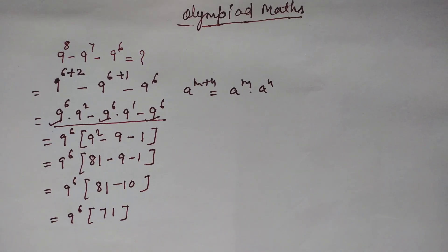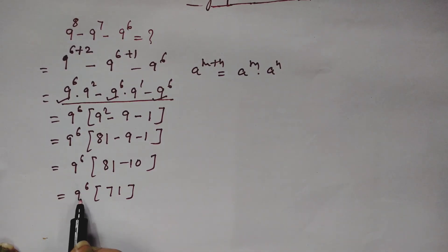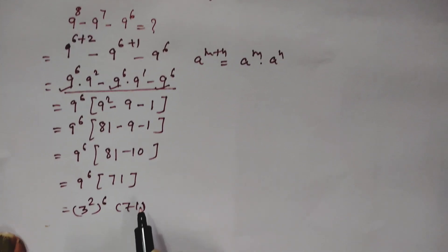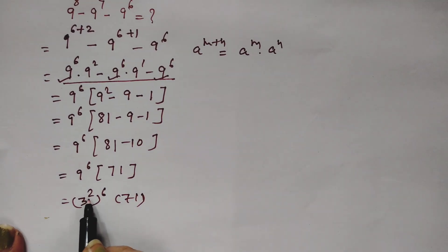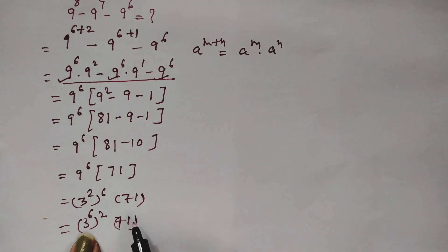This is not the final answer yet — we still need to simplify 9^6. We know that 9 is equal to 3 squared, so we can write 9^6 as (3^2) to the power 6, and 71 remains as it is. We then apply the power rule to exchange the exponents: (3^2)^6 becomes 3^12.